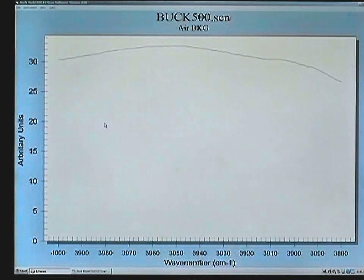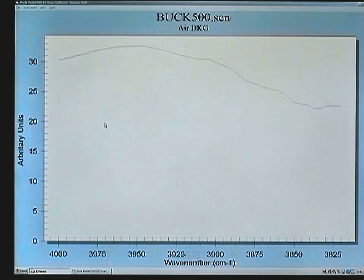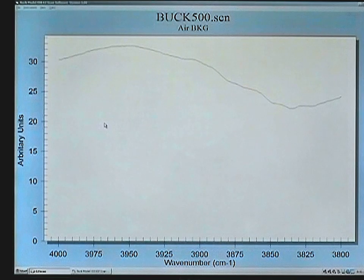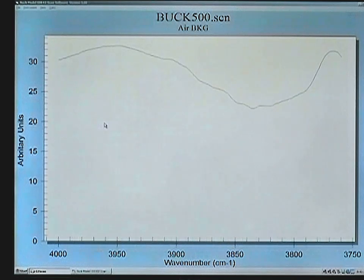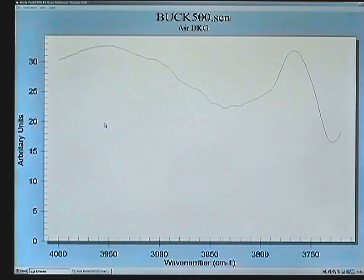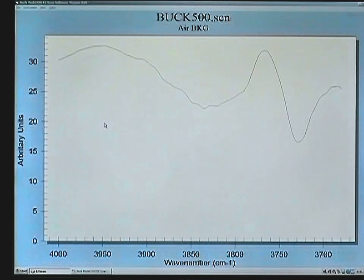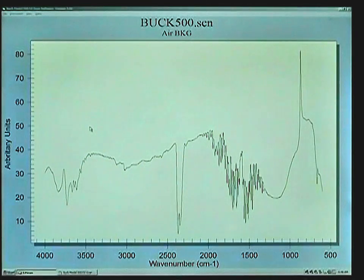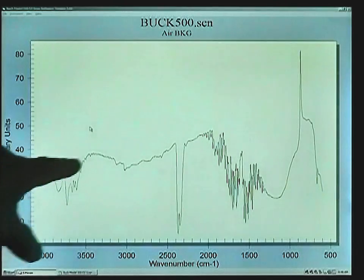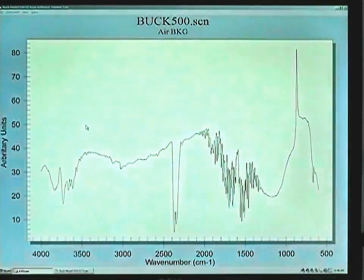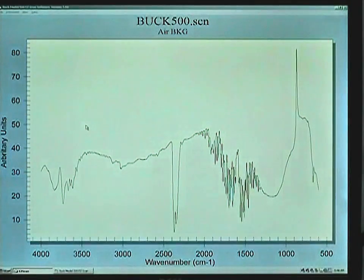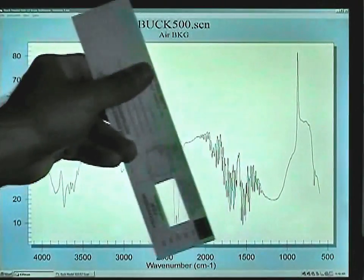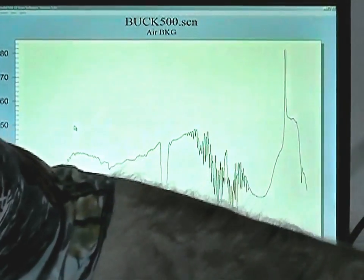The system will initialize itself and begin to collect the single beam data of the Air Background. When this is finished, we will run a polystyrene card and show how to create the percent transmission spectrum of that sample. When the single beam scan of the background is complete, you can see your profile of energy coming through the system. Take your polystyrene card and put it in the sample holder.